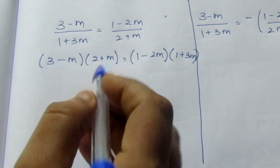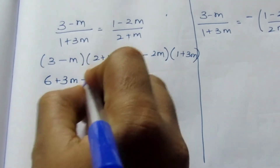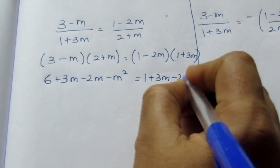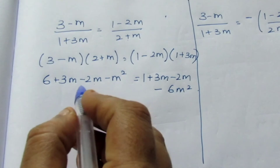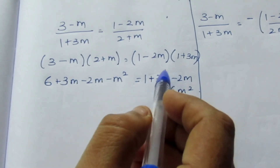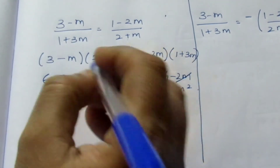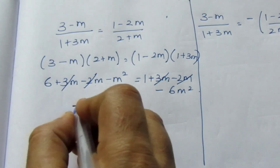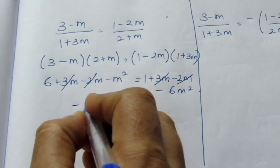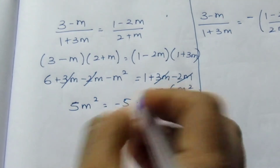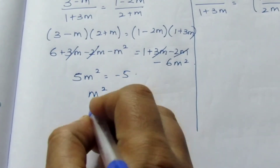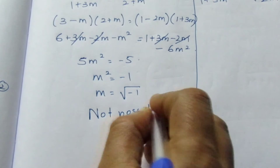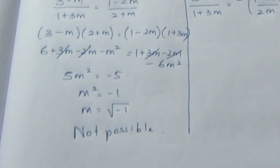Expanding using the binomial multiply: 6 + 3m − 2m − m² = 1 + 3m − 2m − 6m². Solving the like terms, the 2 cancels and we get 5m² = −1, so m = √(−1), which is not possible. So the plus case gives no valid solution.